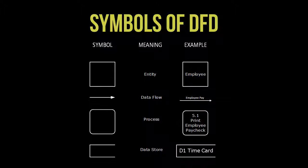A DFD consists of four symbols: the entity, the dataflow, the process, and the datastore. Let's take a look at each. The entity represents any external agent — for example, an individual, department, business system, etc. — that either receives or supplies data to the HR system.